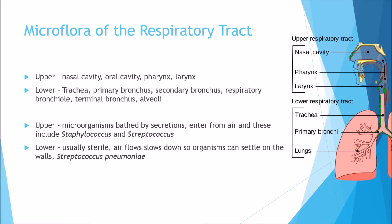The microflora of the respiratory tract consists of the upper and lower tract. The upper tract includes the nasal cavity, oral cavity, pharynx, and larynx. The lower tract includes the trachea, primary bronchus, secondary bronchus, respiratory bronchi, bronchioles, terminal bronchus, and the alveoli. Microflora in the upper tract includes bacteria bathed by secretions that can enter from the air — basically Staphylococcus and Streptococcus. The lower tract is usually sterile, but because airflow slows down, organisms can settle on the walls, including Streptococcus pneumoniae which can eventually cause pneumonia.